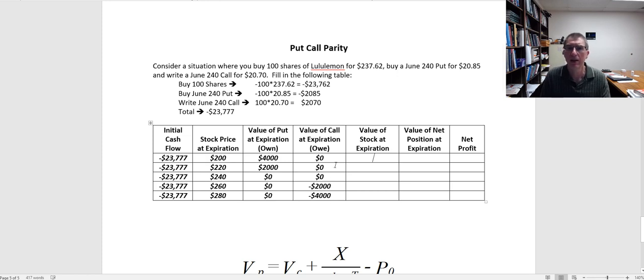Now let's look at the value of the stock. Because remember, I purchased 100 shares of the stock, so I still own that stock. If it closes at $200, it's worth $20,000. If it closes at $220, that's worth $22,000. If it closes at $240, that's worth $24,000. If it closes at $260, it's worth $26,000. And if it closes at $280, it's worth $28,000.